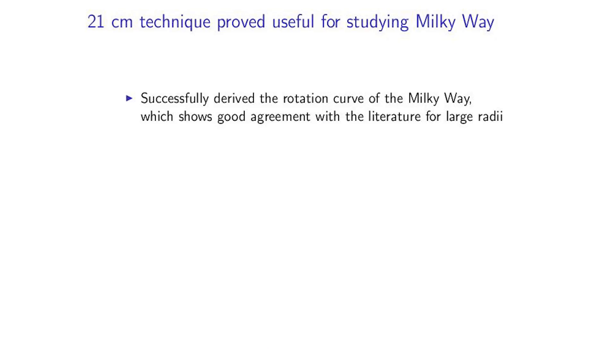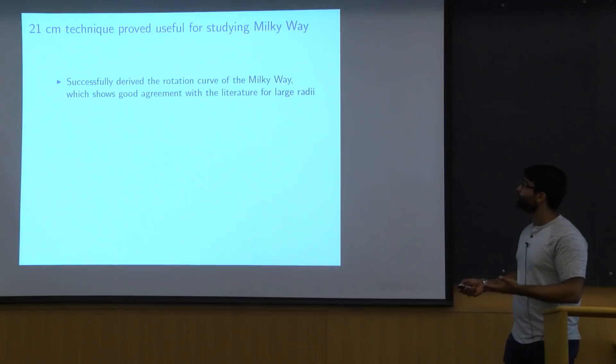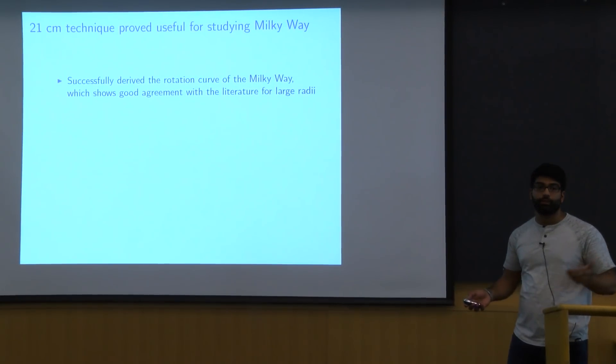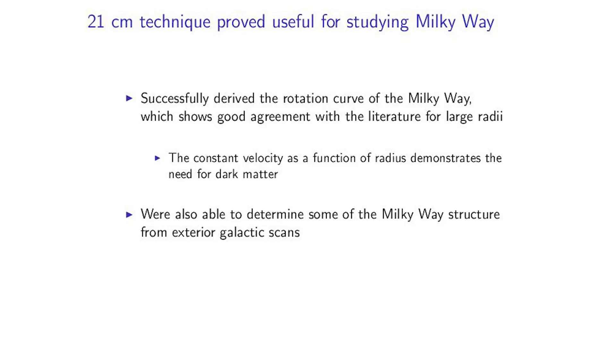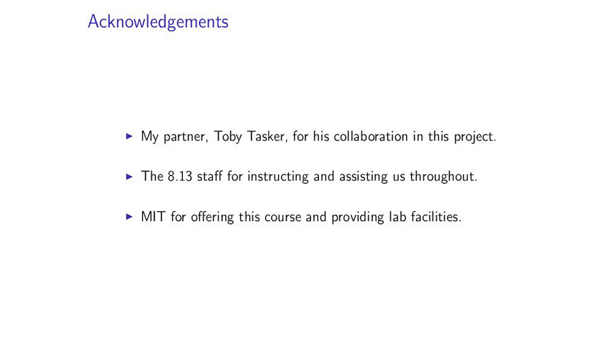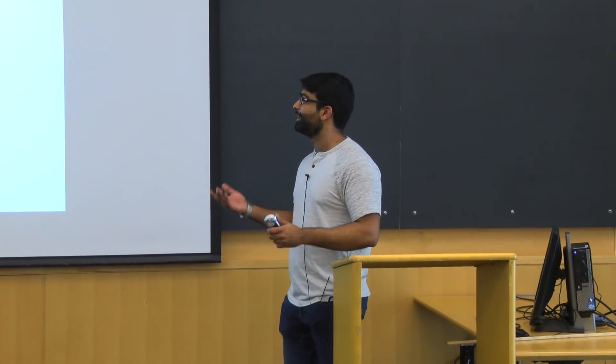So in conclusion, we were able to use this 21 centimeter technique to derive the rotation curve of the Milky Way. And we saw pretty good agreement with the literature for large radii. In particular, we saw there was a constant velocity function as we went out to higher radii. And that disagrees with the theoretical prediction. And so this really necessitates some sort of dark matter, which can compensate for the discrepancy. We were also able to see some of the Milky Way structure by looking at the exterior points. And in particular, we saw two spiral lines in that second quadrant. And finally, I would like to thank my partner, Toby, for all his help throughout the semester and on this particular experiment, some last minute data collection. I'd like to thank the 813 staff for all their help throughout and instruction. And then MIT for offering this course.